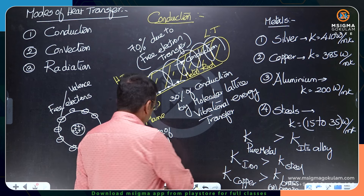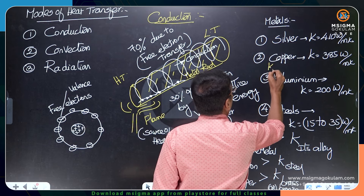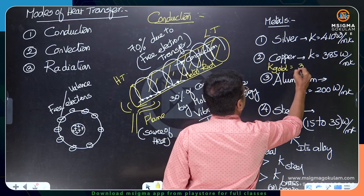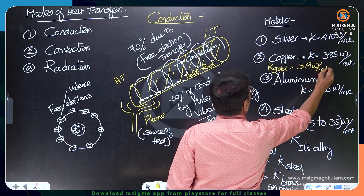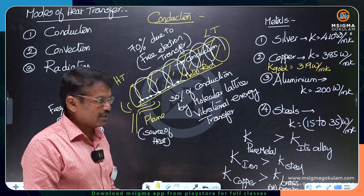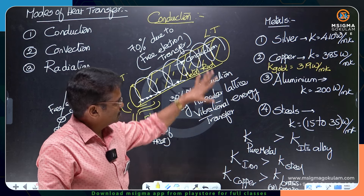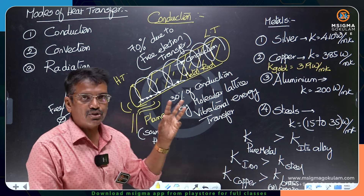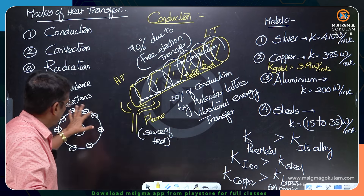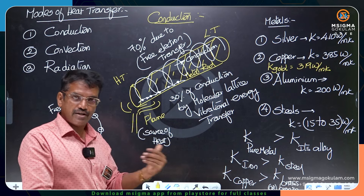Gold is a precious metallic material with a thermal conductivity of 390 W/m·K. These metals all possess good conductivity because of the abundant free electrons present in the outermost orbits of their atoms.